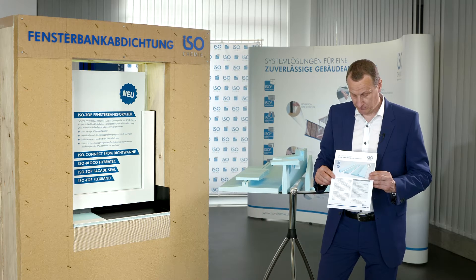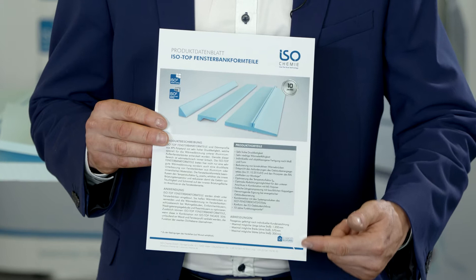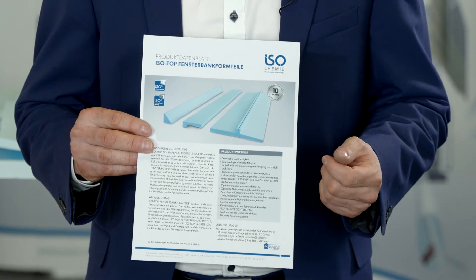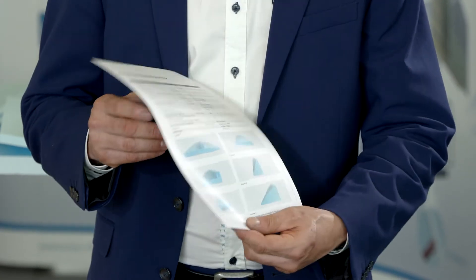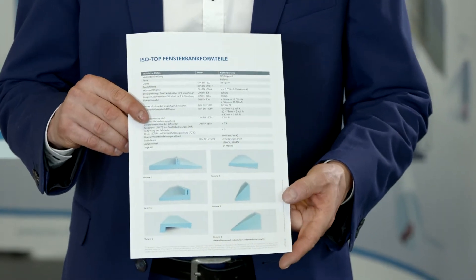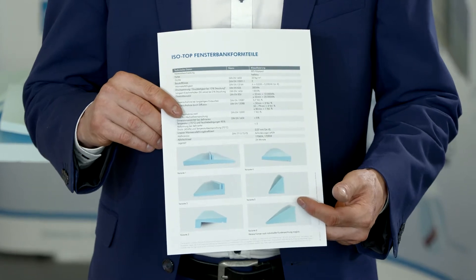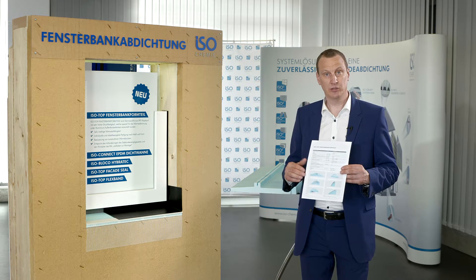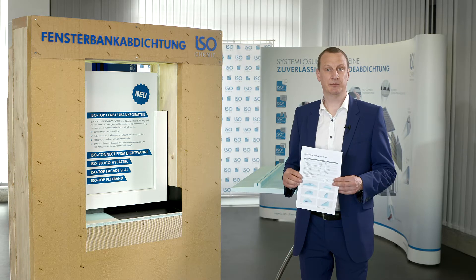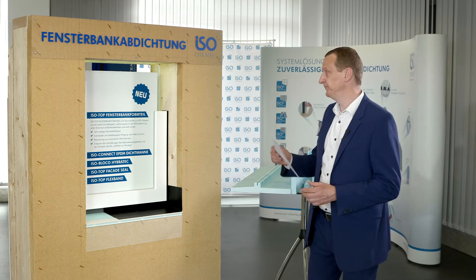Here we have illustrated a few examples on this datasheet for your planning and calculation. The technical datasheet contains a selection of possible cross-sections that you may use as a guide. However, we produce the forms to our customers' requirements in 1.2 metre lengths, to a width of 57 centimetres and a height of 200 millimetres.